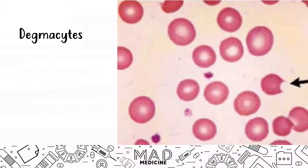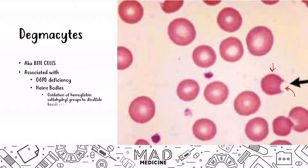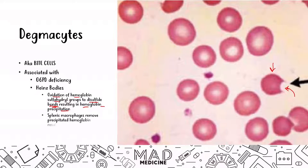Degmosites are bite cells — it looks like there has been a bite taken out of the red blood cell. Degmosites are associated with G6PD deficiency and also with Heinz bodies. Heinz bodies are abnormal hemoglobin precipitations that occur due to oxidation of the hemoglobin sulfhydryl groups to disulfide bonds, resulting in precipitation of hemoglobin. The splenic macrophages notice the precipitated hemoglobin and remove it, essentially taking a bite out of the red blood cell — which is why it's called a bite cell or degmosite.